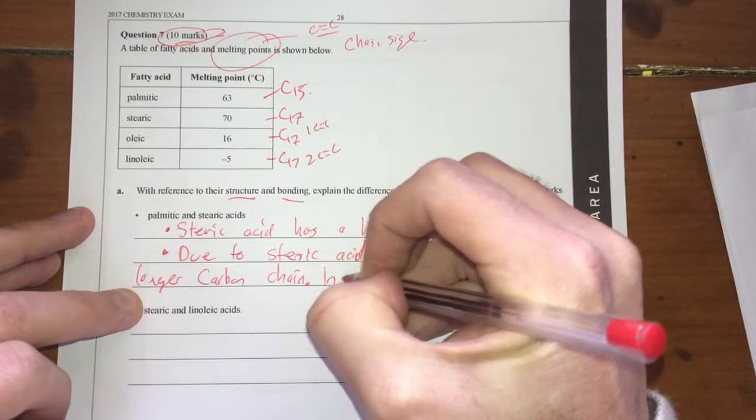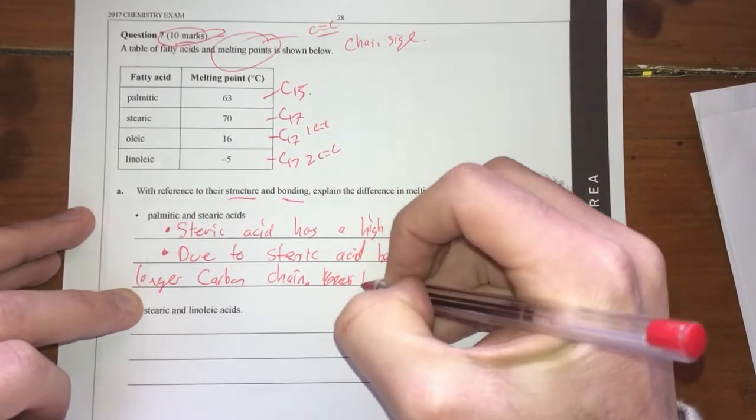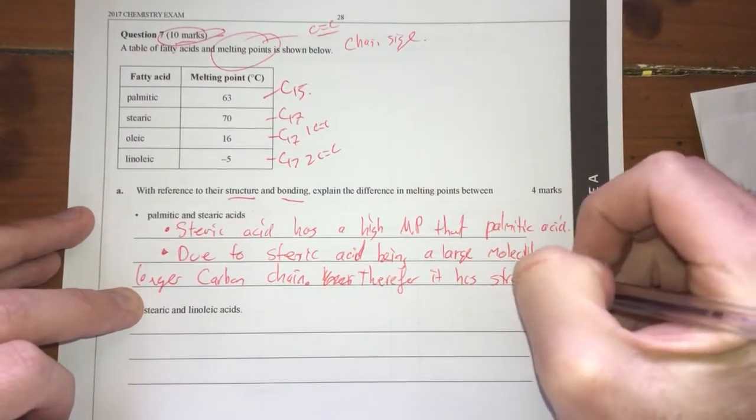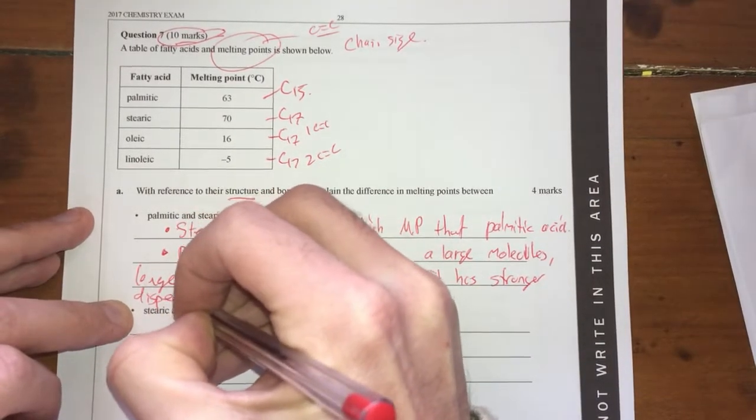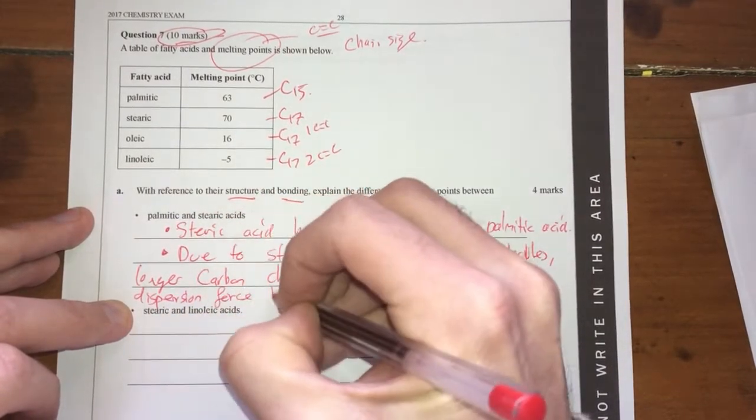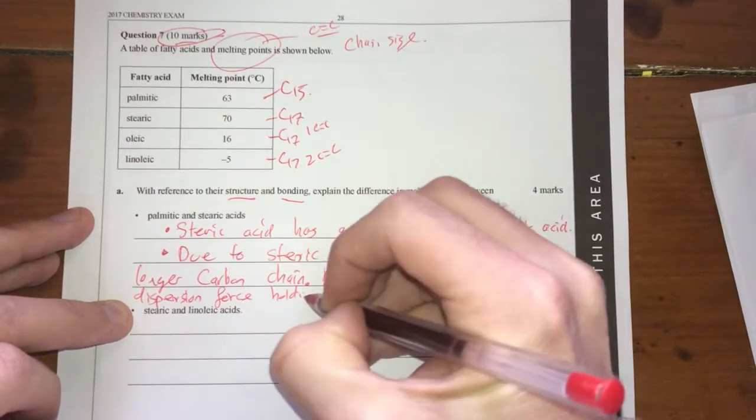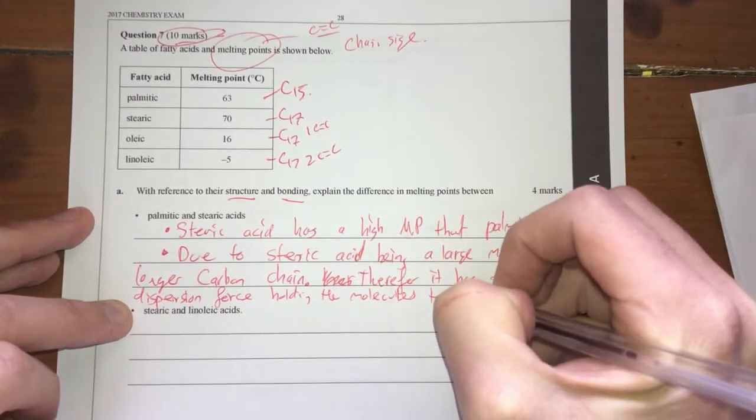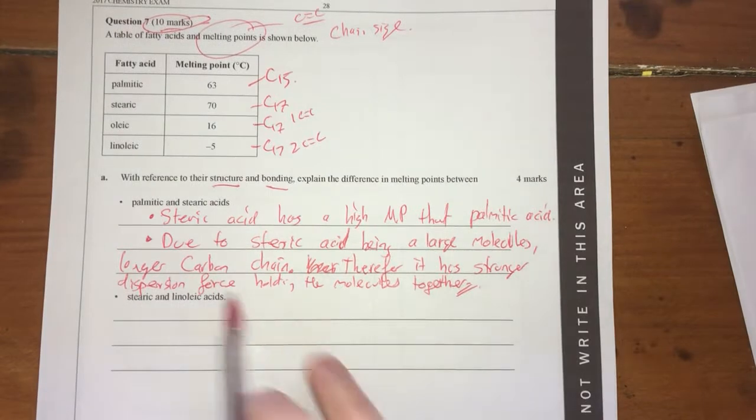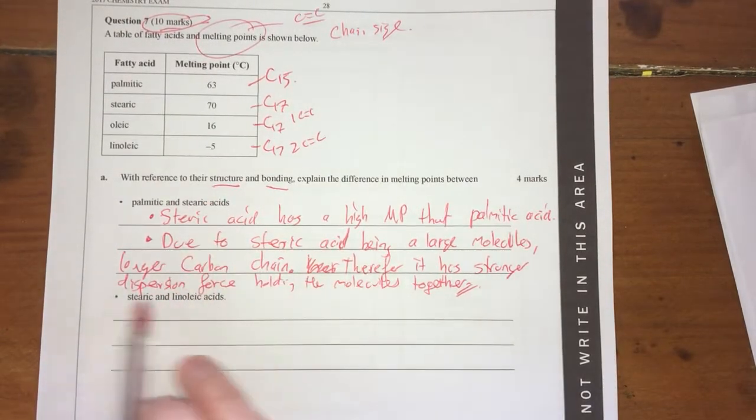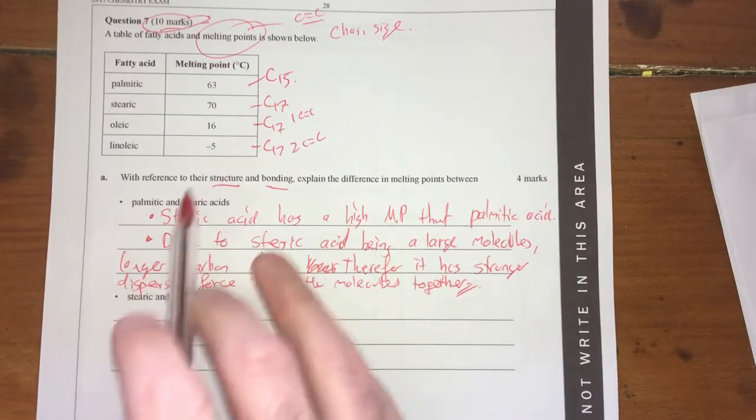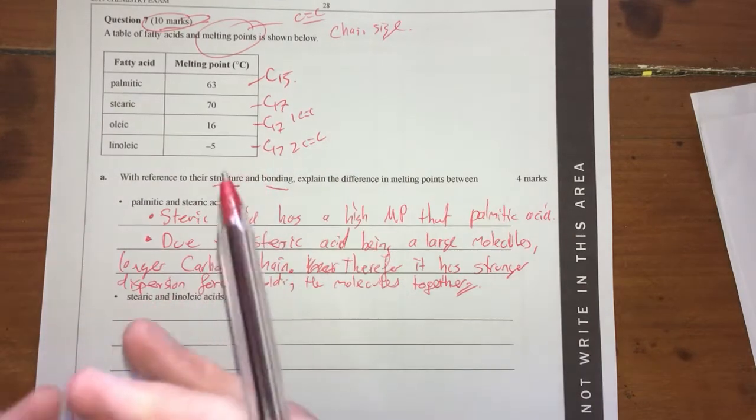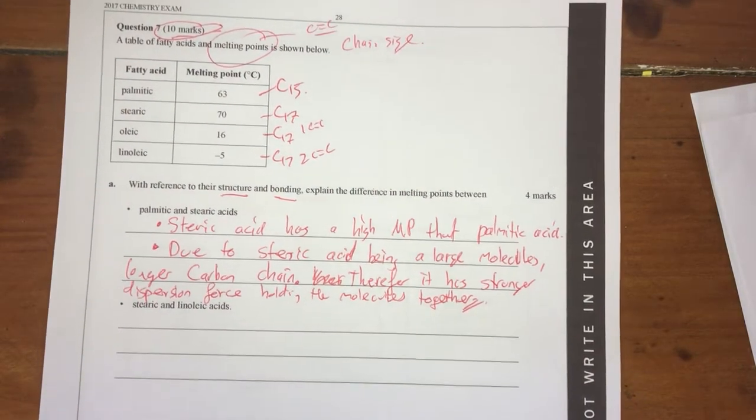This increase, therefore, it has stronger dispersion forces holding the molecules together. That's key when you're talking about structure and bonding. You've got to think about the intermolecular forces or intermolecular bonds there. And because you're looking at all these guys here, you're really talking about the dispersion forces holding them together. That's the main one that's going to be happening with your fatty acids there.